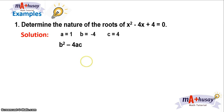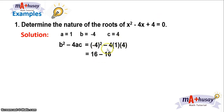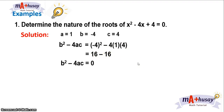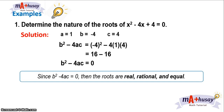Substituting these values, we have (−4)² − 4(1)(4). We know that (−4)² = 16, and 4 × 1 × 4 = 16. So 16 − 16 = 0. Therefore, the discriminant b² − 4ac is equal to zero. We can describe the nature of the roots of x² − 4x + 4 = 0 as real, rational, and equal.